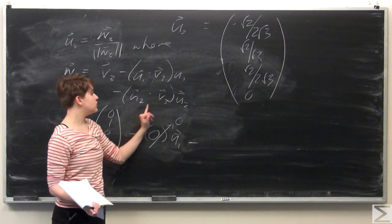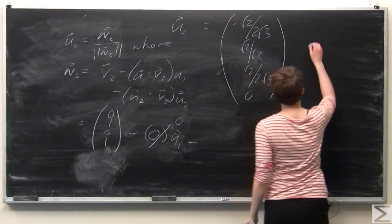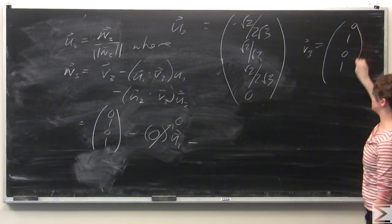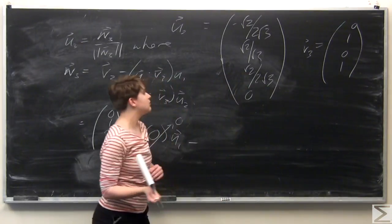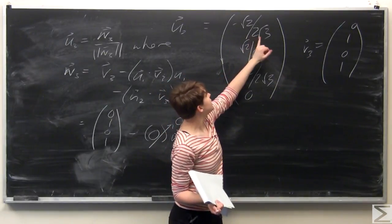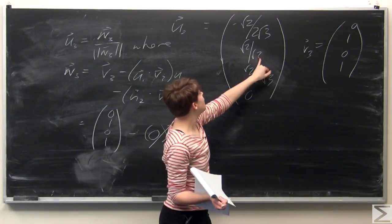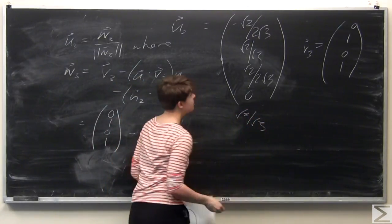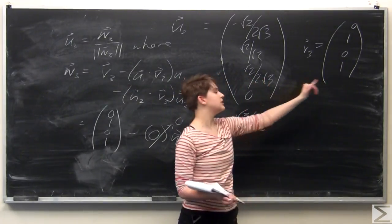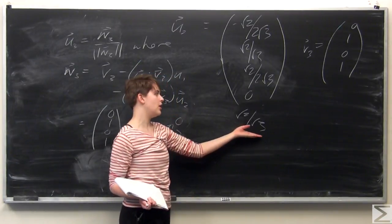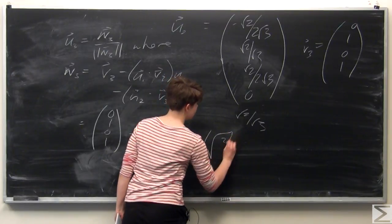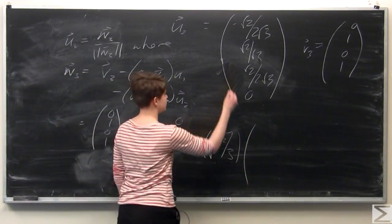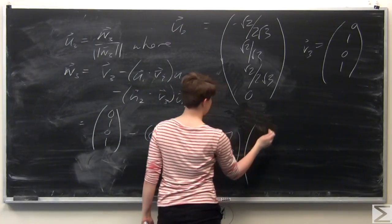Now we need to calculate u2 dotted with v3. v3 is (0, 1, 0, 1). Computing component-wise: negative root 2 over 2 root 3 times 0 is 0, root 2 over root 3 times 1 is root 2 over root 3, root 2 over 2 root 3 times 0 is 0, and 0 times 1 is 0. So the dot product u2 dot v3 is equal to root 2 over root 3, and this is all times u2.